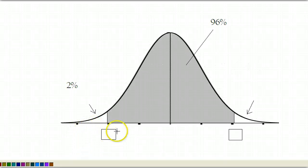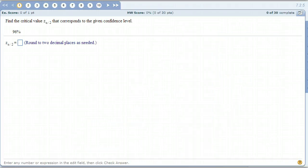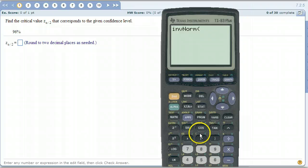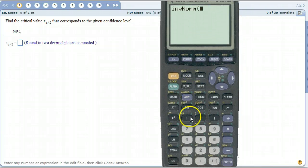But in particular, this down here at the bottom is 2%. So the area to the left of this number right here is 0.02. The area to the right of this number is 0.02. So when we plug into the inverse normal, we plug in 0.02.